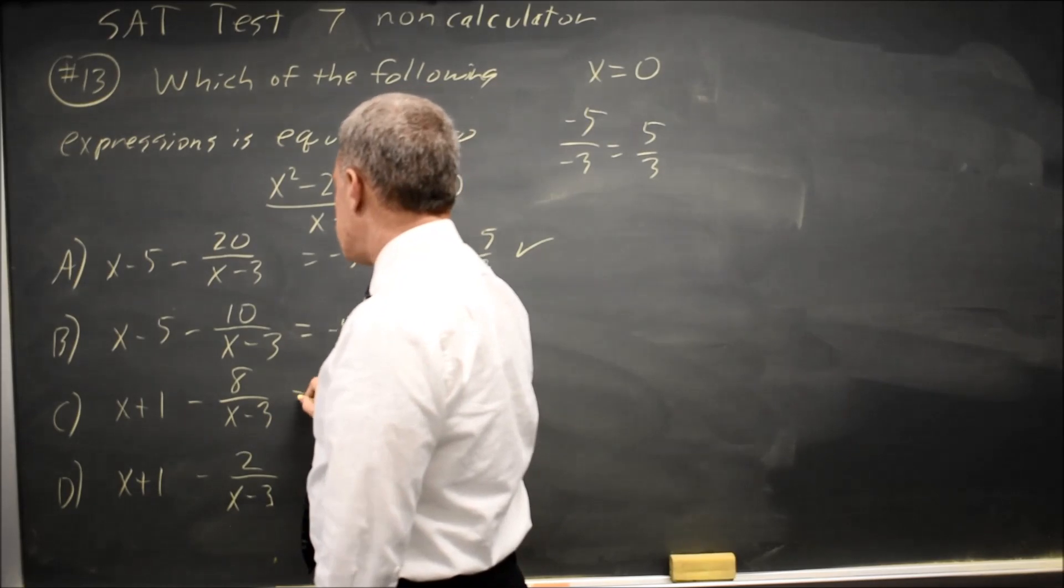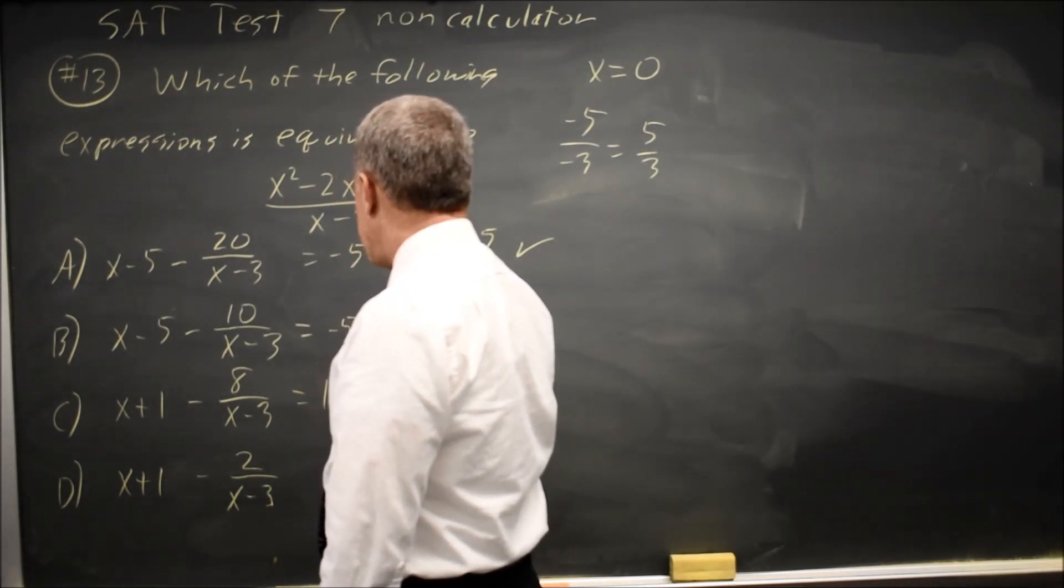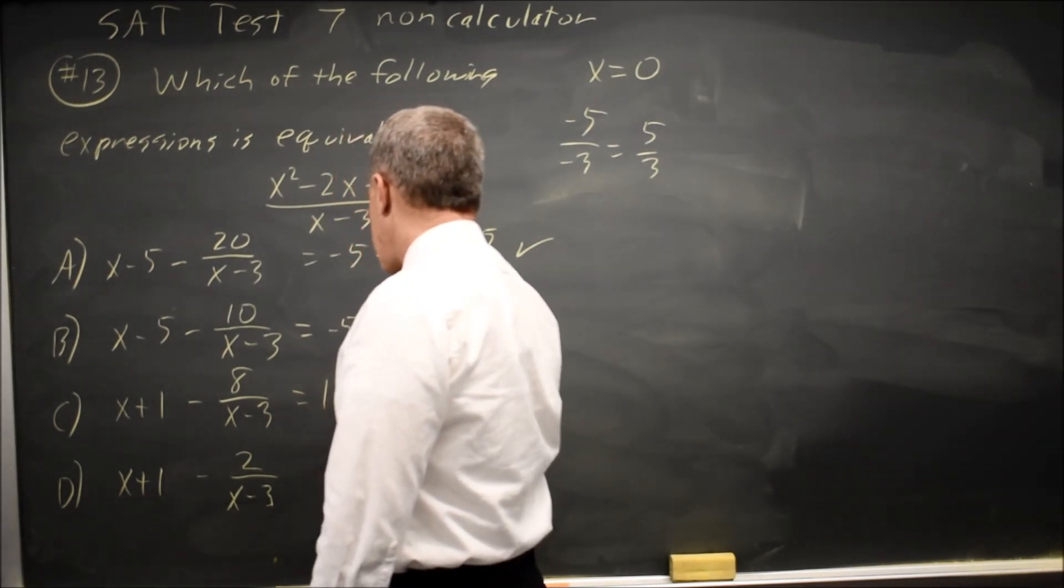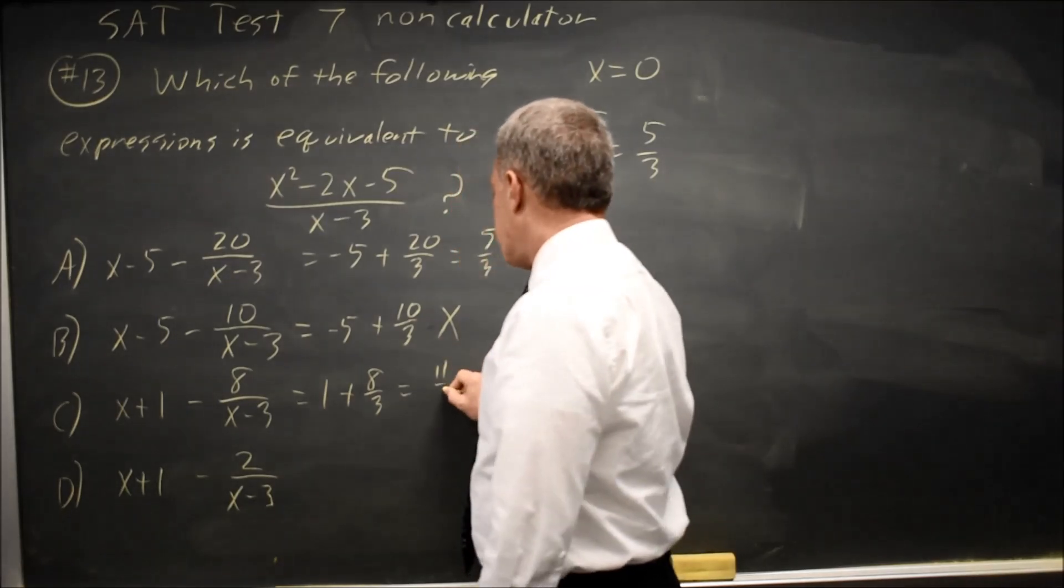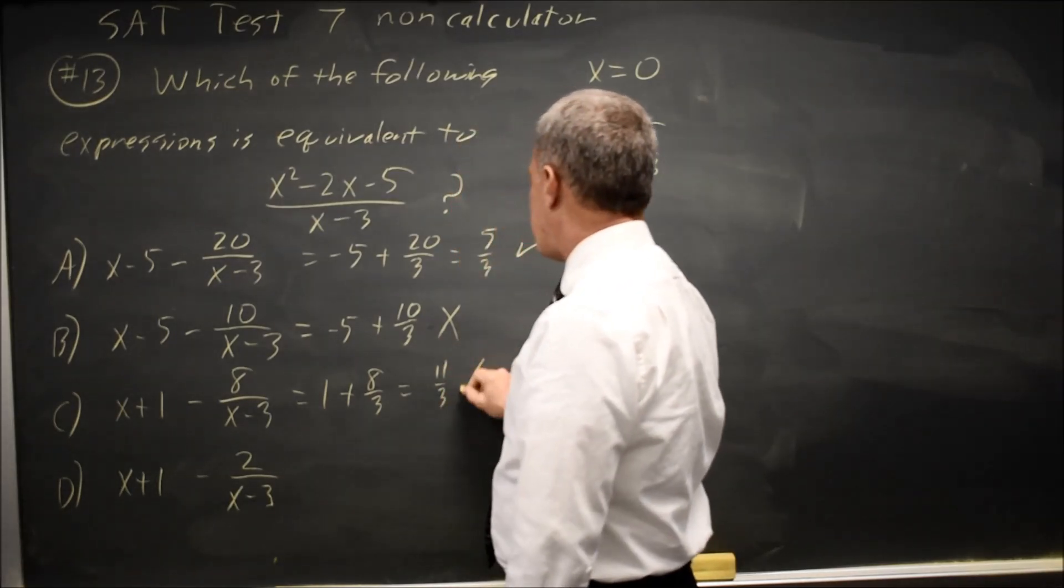0 plus 1 is 1 minus 8 over negative 3 is plus 8 over 3 is 11 over 3, which is not 5 over 3.